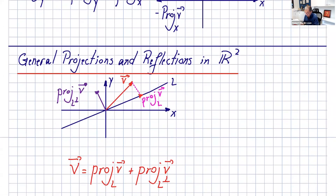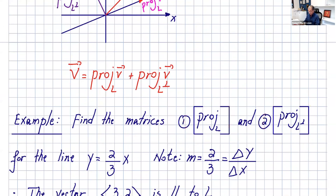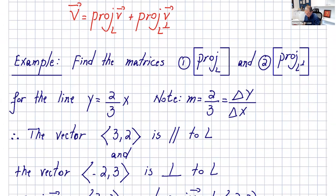Now let's talk about general projections and reflections in R2. Let's say we have a line L in R2 through the origin. Our goal is to find the coordinates of the vector parallel to the line — that's the projection of v onto L — and also the vector perpendicular to our line, which is the projection of v onto L perp. We can write v as the projection of v onto L plus the projection of v onto L perp.